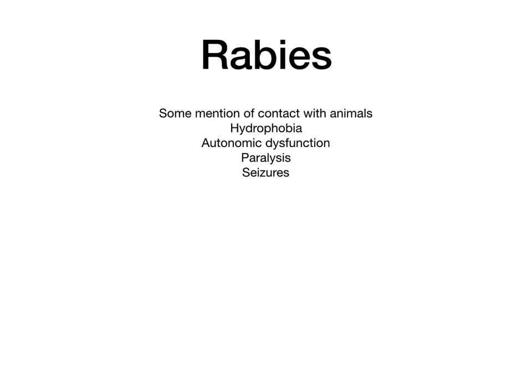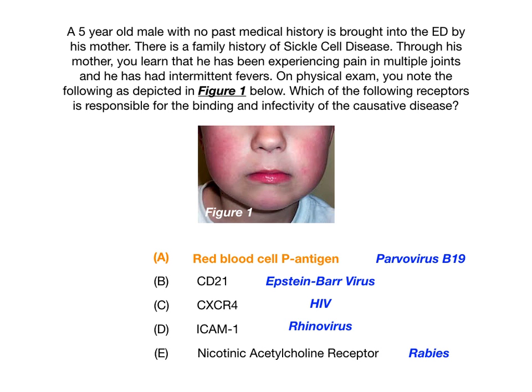For rabies, they would mention contact with animals, or describe someone traveling, hiking, or with environmental exposure suggesting animal contact. They might also describe hydrophobia, autonomic dysfunction, or neurologic sequelae like paralysis or seizures. None of this was in our question stem — no animals, no neurologic findings — so it's not rabies and therefore not the nicotinic acetylcholine receptor.